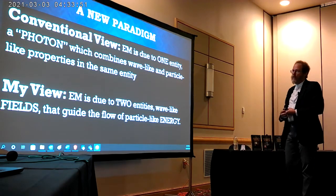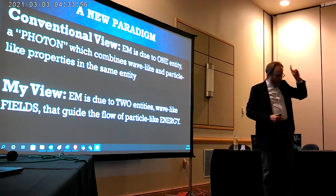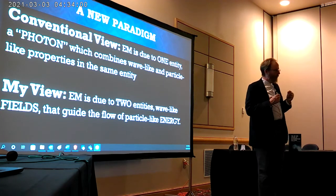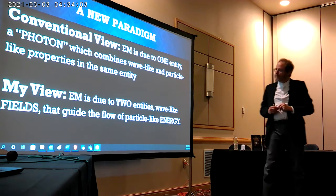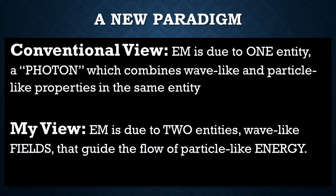The conventional view is that electromagnetism is due to one entity — a photon — combining the mutually contradictory properties of particle and wave simultaneously. My view is that electromagnetism has to be due to at least two entities: wave-like fields that guide the flow of energy, which in the quantum limit behaves like a particle. This is basically the pilot wave theory of quantum mechanics popping out of a classical electromagnetic analysis.